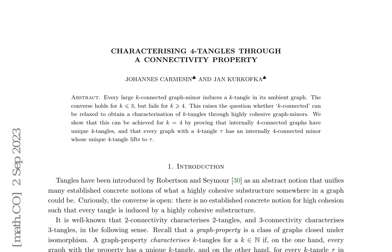The characterization of four-tangles is investigated through a connectivity property. A k-tangle in a graph is a highly cohesive substructure, introduced by Robertson and Seymour. While two-connectivity and three-connectivity characterize two-tangles and three-tangles respectively, this is not the case for k-tangles with k greater than or equal to four.